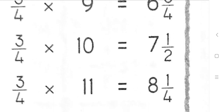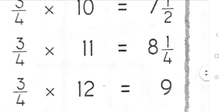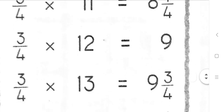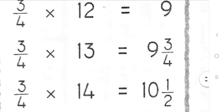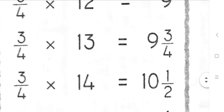3 quarters 12s are 9. 3 quarters 13s are 9 and 3 quarters. 3 quarters 14s are 10 and a half.